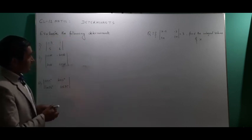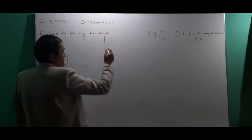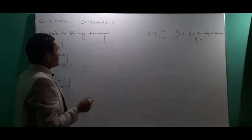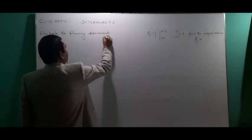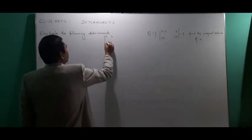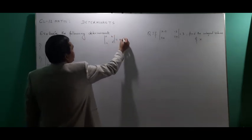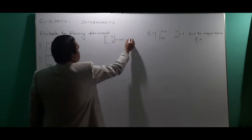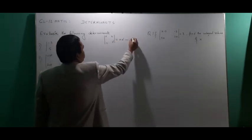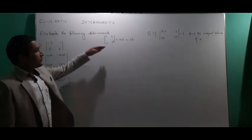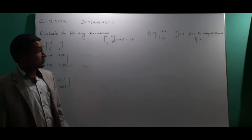Evaluate the following determinant. First, I will show you the formula. For a 2x2 matrix with elements A, B, C, D, the formula is very simple: A multiplied by D minus C multiplied by B. This is the basic formula for a second-order determinant.